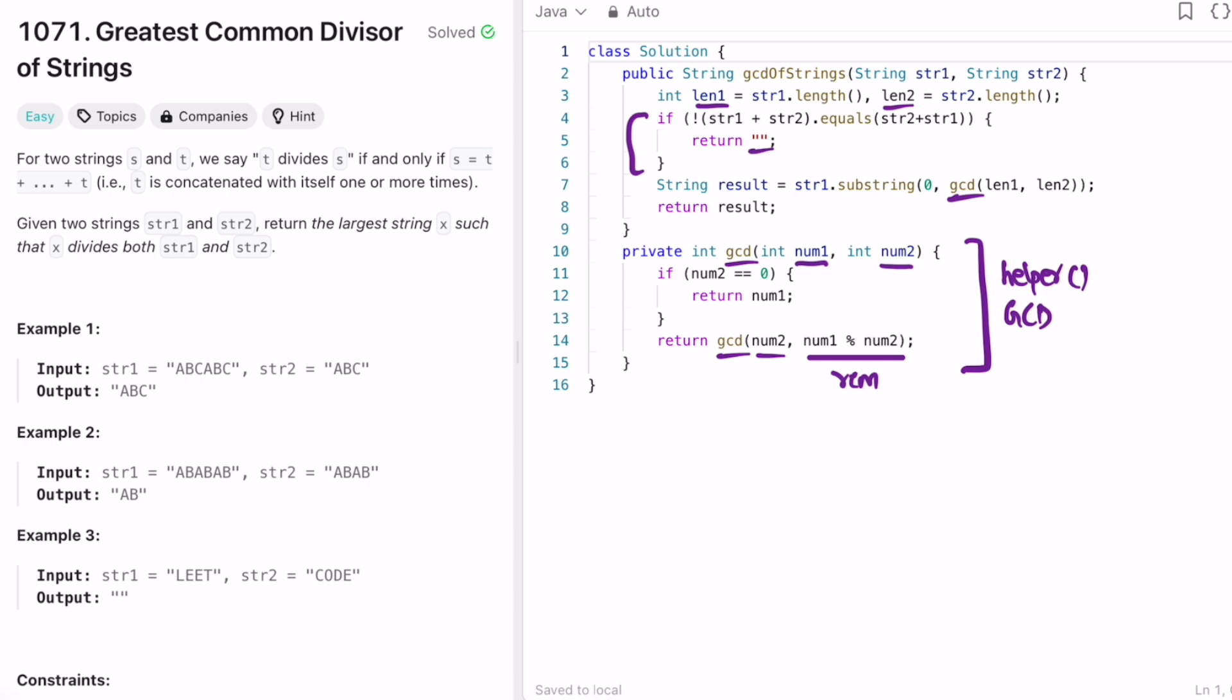Like in example three, if you combine LEET and CODE, you can see LEETCODE is not equal to CODELEET, so you can never form a greatest common divisor. So in that case you return empty string as the output.